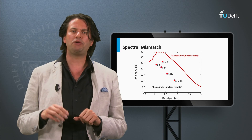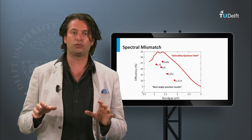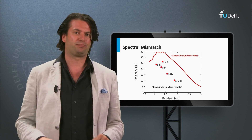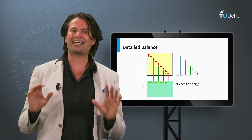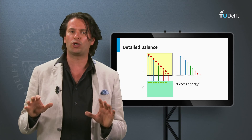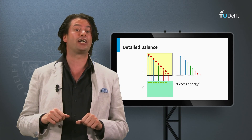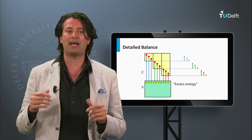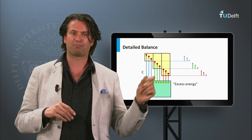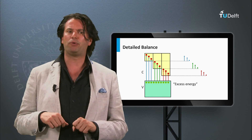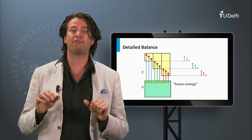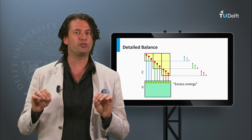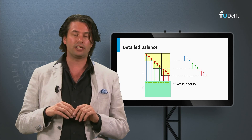Later in this course we will discuss various concepts which might allow us to pass the Shockley-Queisser limit. A way to reduce the amount of excess energy is to use more than one semiconductor material, often referred to as a multi-junction. This allows us to use more than one band gap and the match with the solar spectrum improves. As you can see in this example, the excess energy can be reduced significantly and the spectral utilization improves. We will discuss such multi-junction concepts in greater detail in week 5.